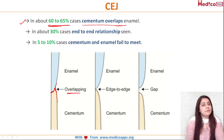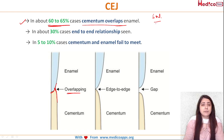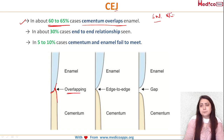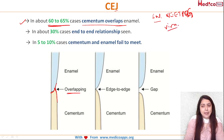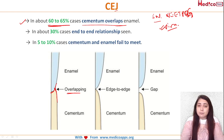Now let me tell you why we are discussing this. If a short note is asked on CEJ you need to mention the formation and everything, but for MCQs for NEET PG and for your vivas, the examiner can ask how many types of CEJ exist — so you should not be blank at that moment.